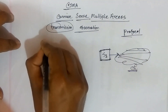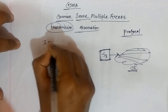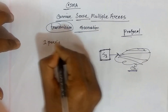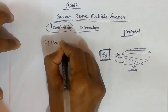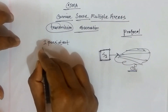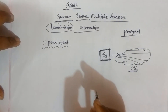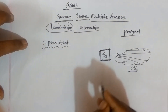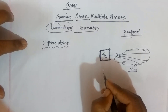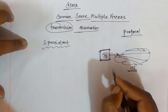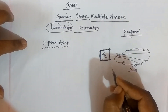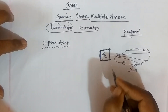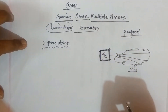The first protocol is One-Persistent CSMA. In One-Persistent CSMA, when a station senses the channel and the channel is free, it transmits with probability 1.